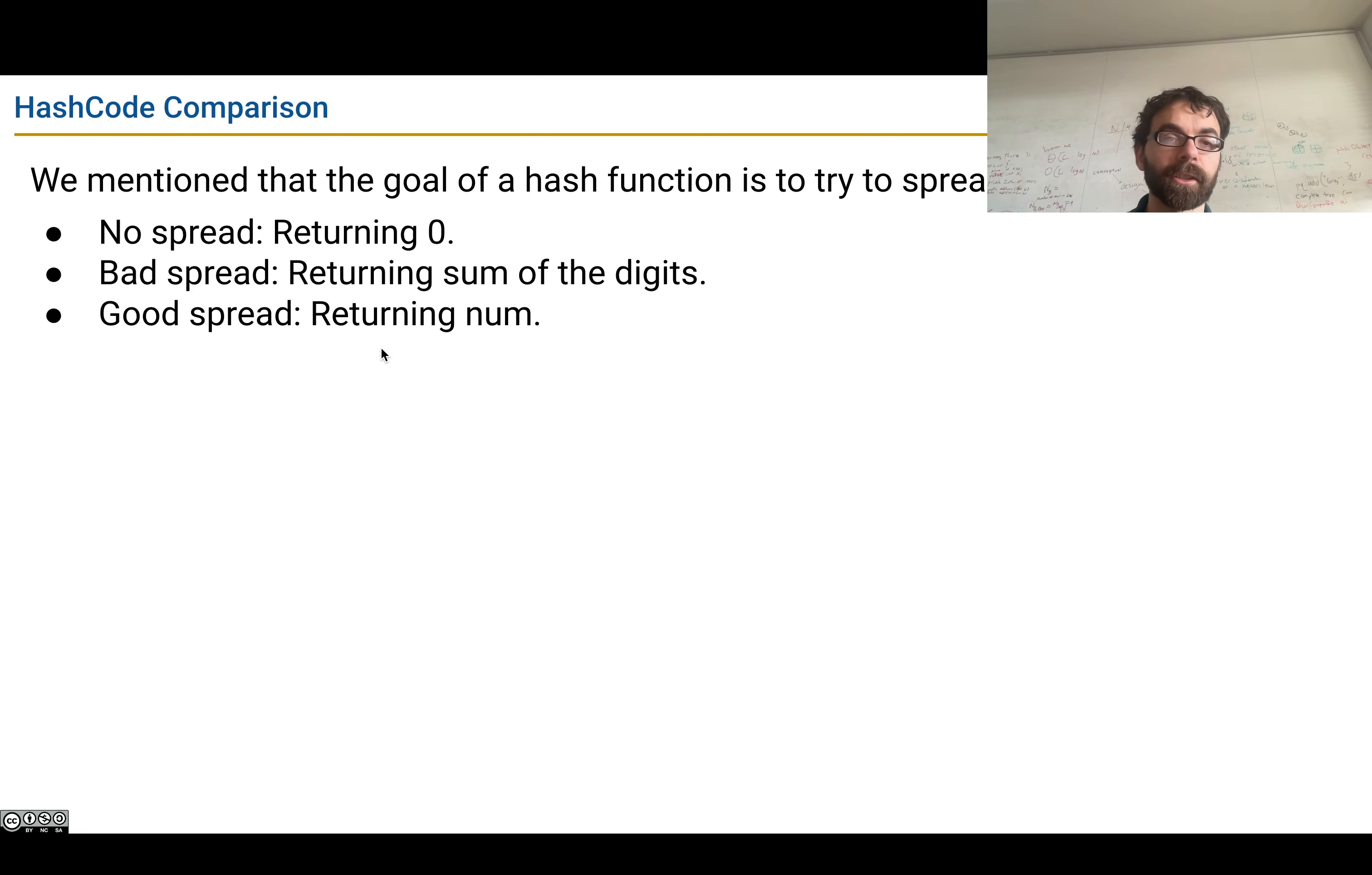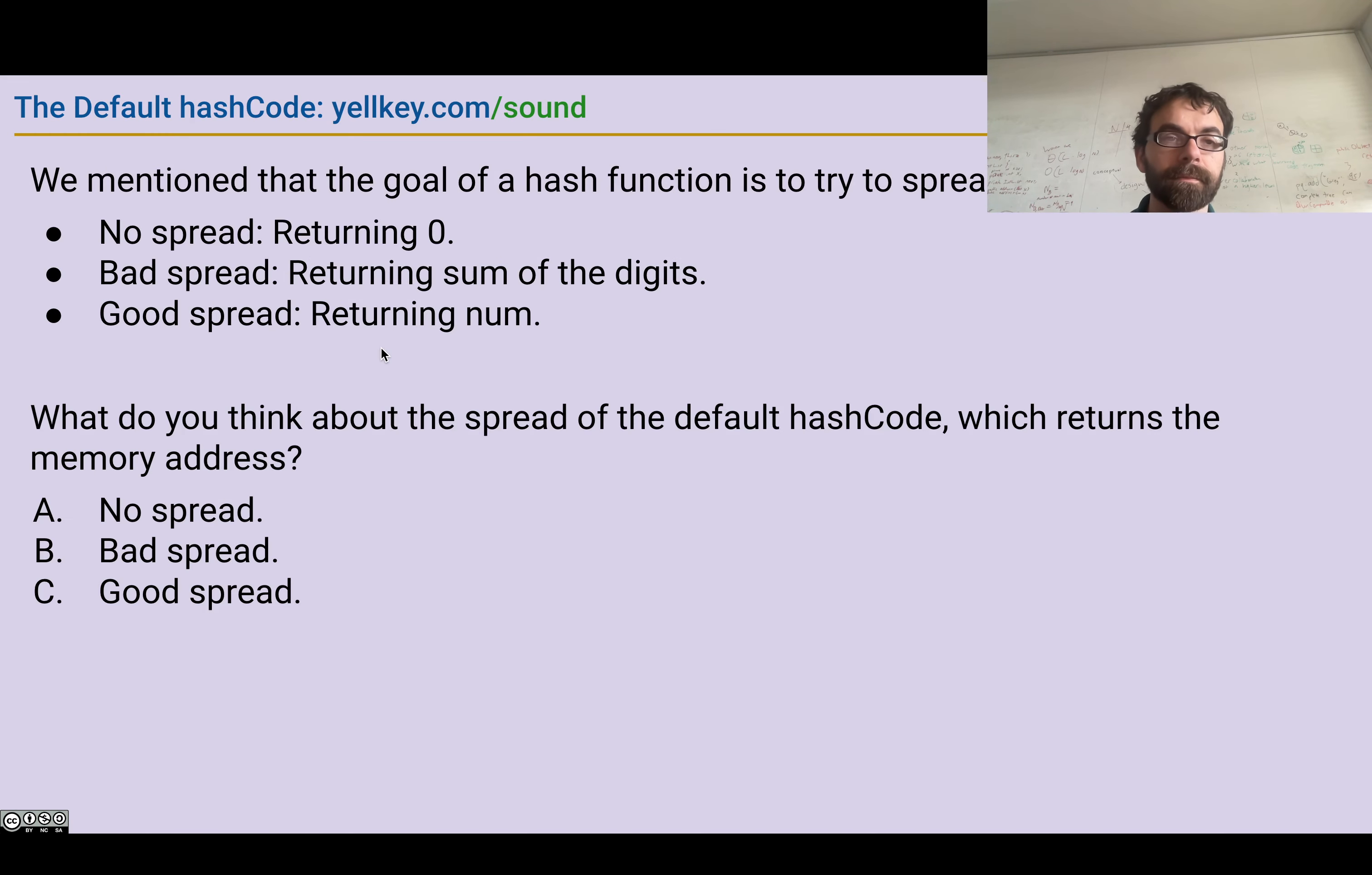So that's the goal of a hash function - we want to get a nice spread. What do you think about the spread of the default hash code, which returns just the memory address? What do you think? Should that mean no spread, bad spread, or good spread?